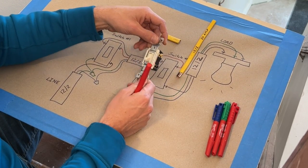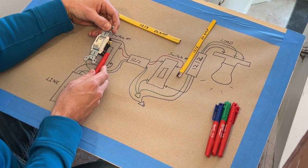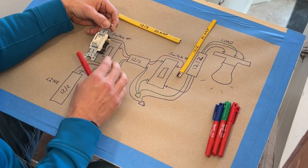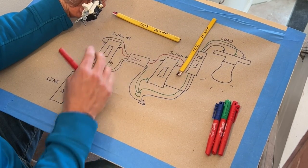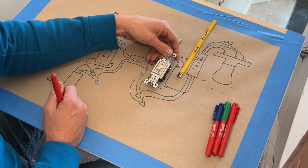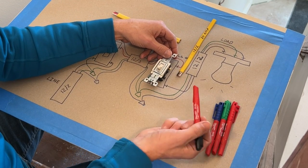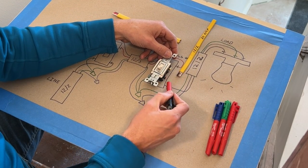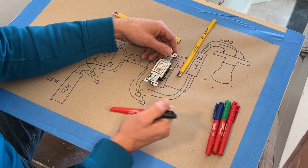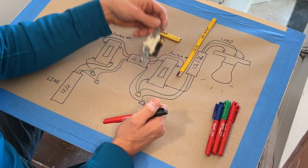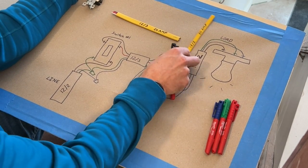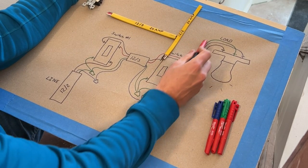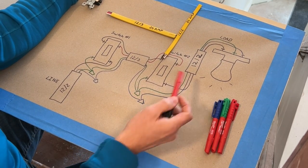So that should make sense. Here we're going to provide power, the hot, into this common. We have some things going on in the middle, which we'll dive deeper into. And then on our second light switch, we're going to be pulling the hot going to our load or our light from the black common as well.